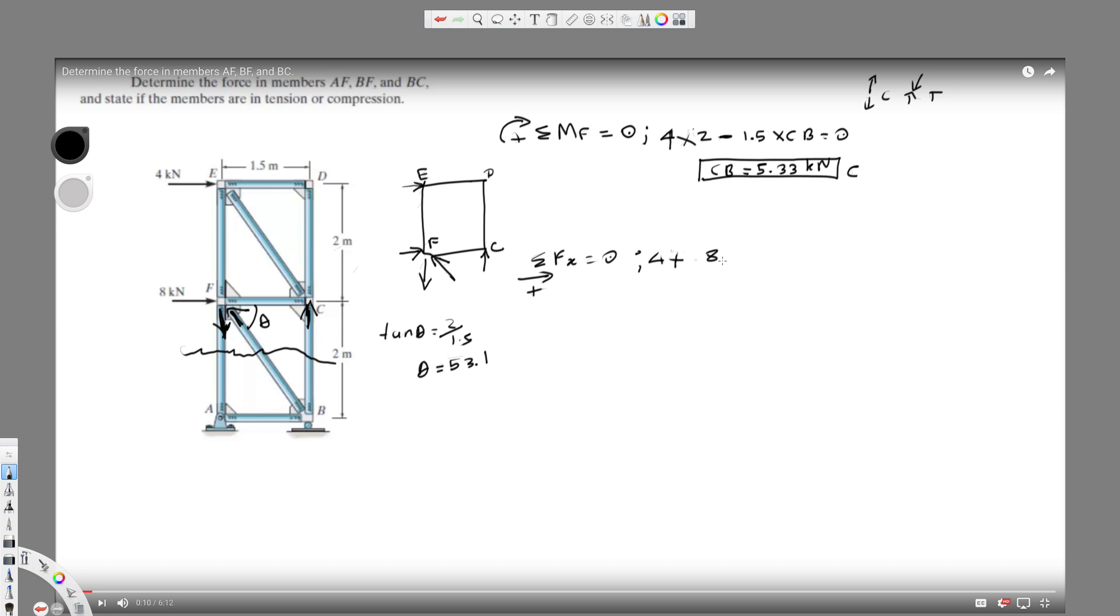And we have the theta now. We can apply here. So 4 plus 8, and we have FB. This is acting in the opposite direction, so it's negative. So minus FB cos theta is equal to 0, because those are the only horizontal components we have. So I can find the FB from this one.